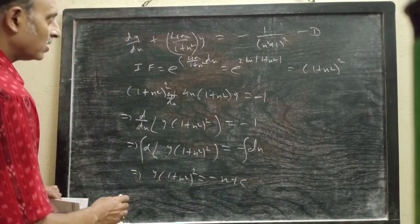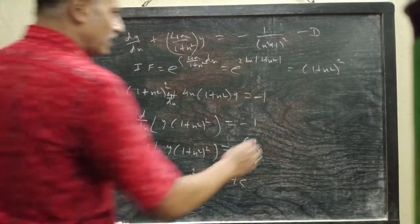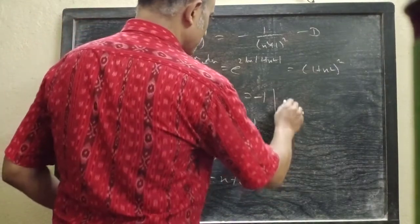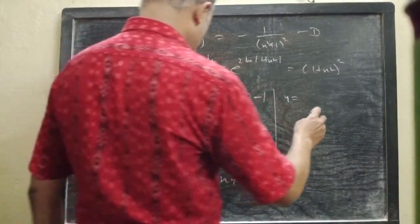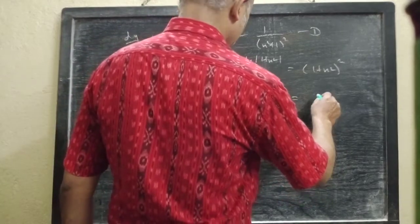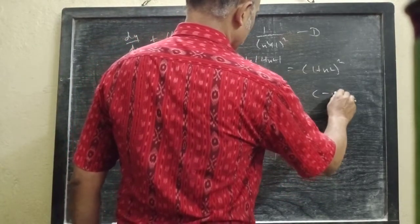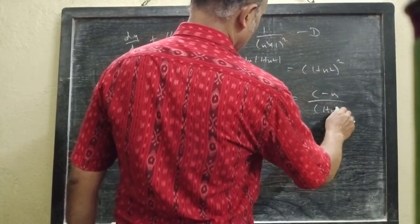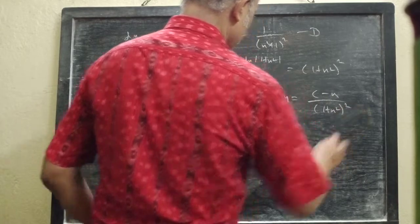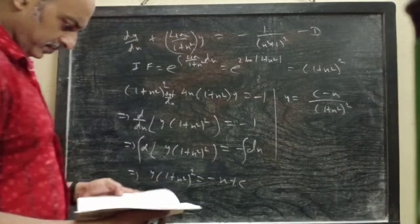And finally we can write the general solution as y = (c - x) / (1 + x²)².